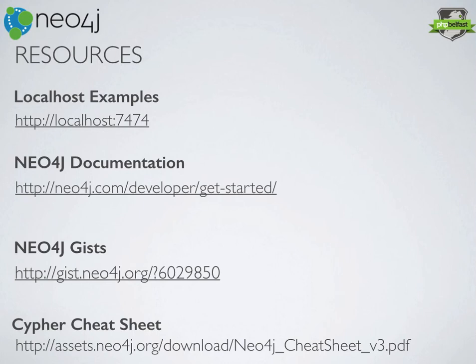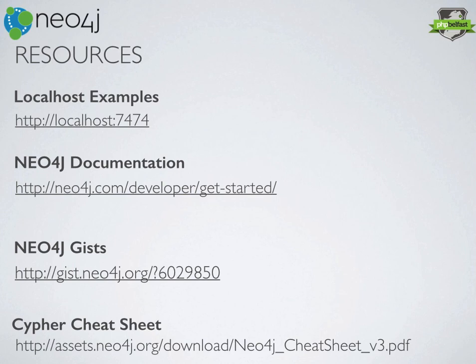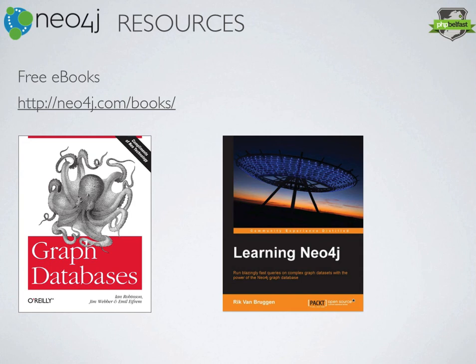A few resources: localhost:7474 — play about with that browser, it's fantastic. There are great tutorials in there. The Neo4j documentation on neo4j.com is a great walkthrough to get you up and running. There's a list of pre-built graphs on the Neo4j Gist website — if you can imagine a set of example graph data, someone's already written the queries to load it. There's also a handy Cypher query language cheat sheet worth reading in those early days. And on the Neo4j website there are a couple of free eBooks available: the O'Reilly Graph Databases and the Learning Neo4j eBooks — freely available as downloads if you provide your name and email.